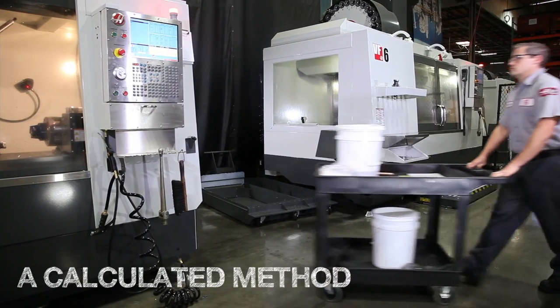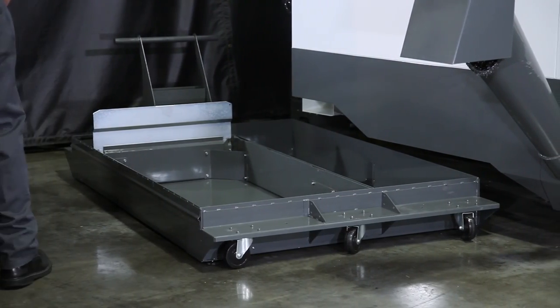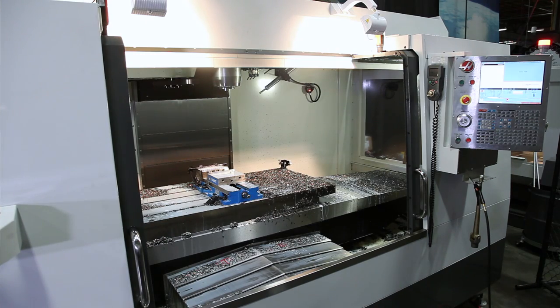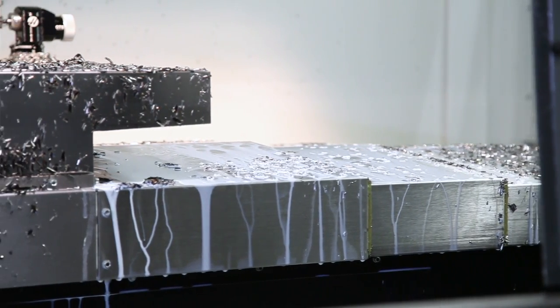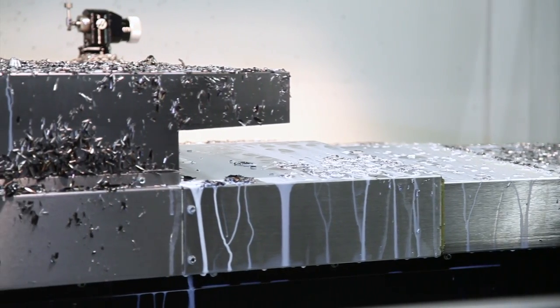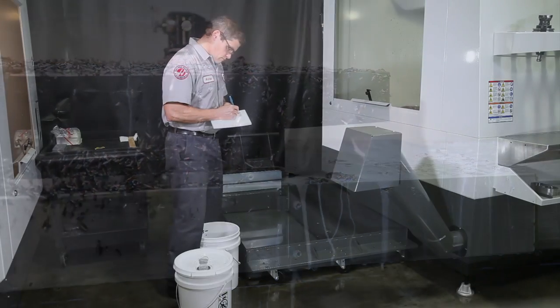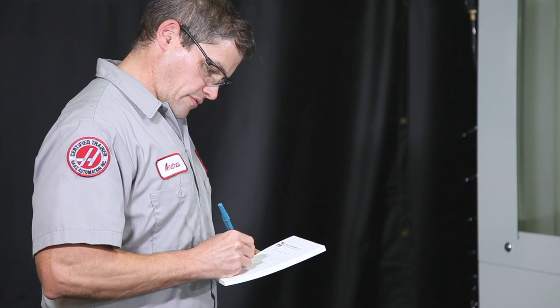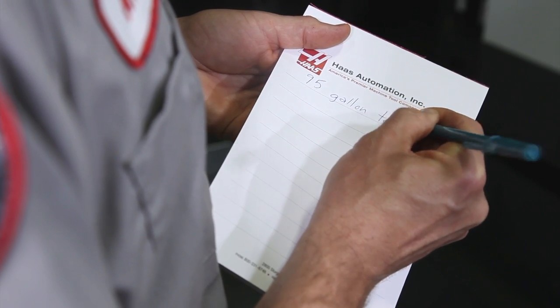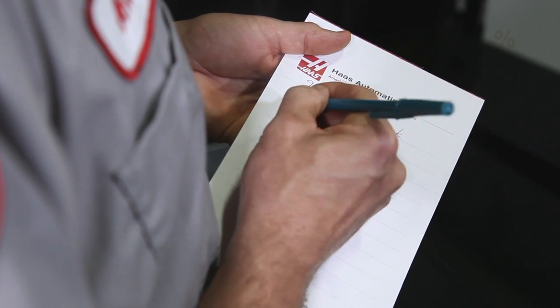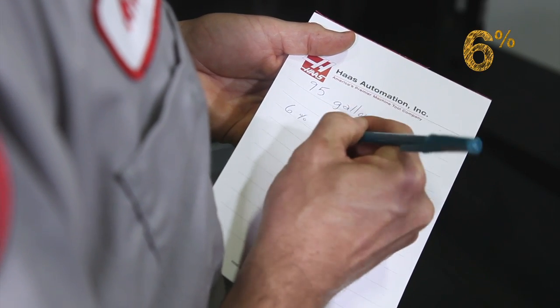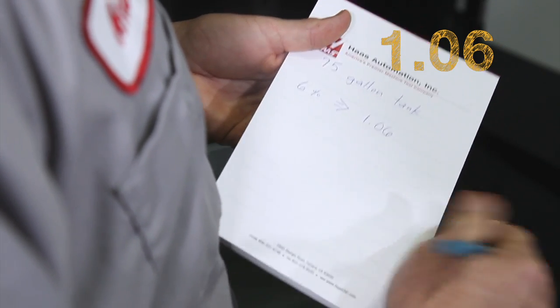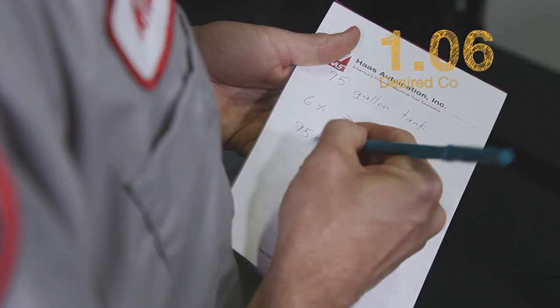The 95 gallon tank on this VF6 is ready to be refilled. This machine has been running a 6% concentration effectively and starting in the 6% range means we won't waste any expensive concentrate. First, we'll calculate the total concentrate needed for the tank. We want to hit a concentration of 6%, so we take our target 6% number and change it to .06 and then we add a 1 to that. 1.06 represents our 6% concentration.